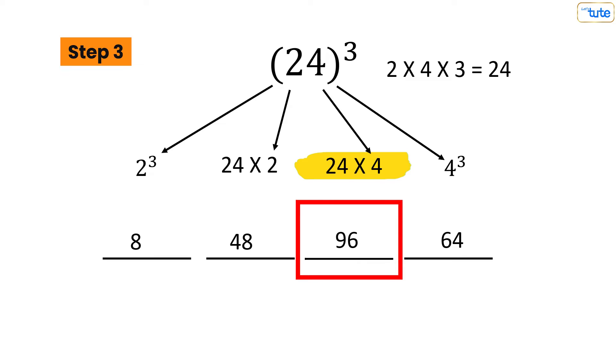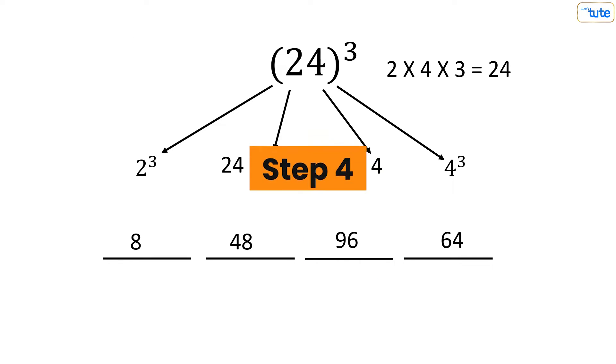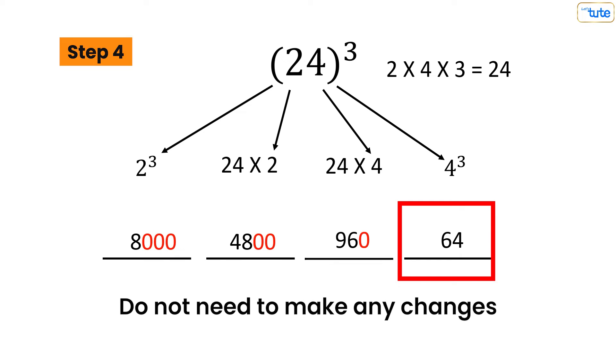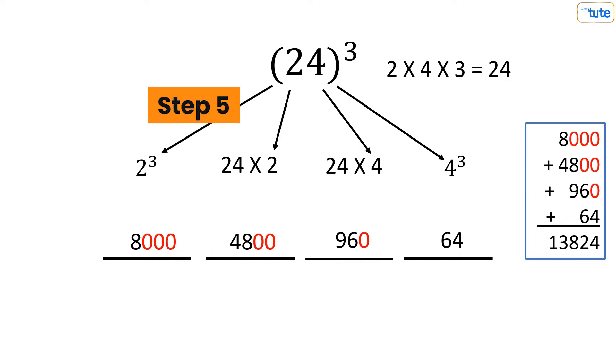Stay with me, we're almost done. In the first part, add three zeros after the number. In the second part, add two zeros. In the third part, add one zero. For the fourth part, we don't make any changes. So it's time for the last step, which is to simply add all four numbers.